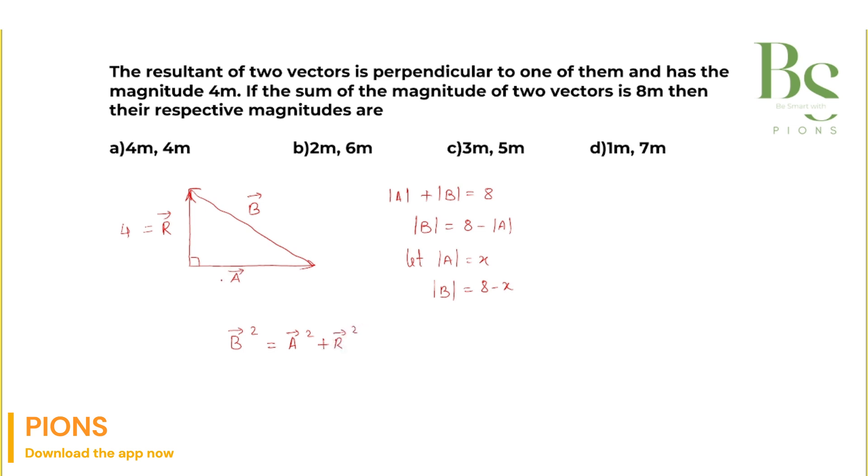So here B is nothing but (8 minus x)² equals A², which is x², and R², which is 16. This will be 64 plus x² minus 16x equals x² plus 16.